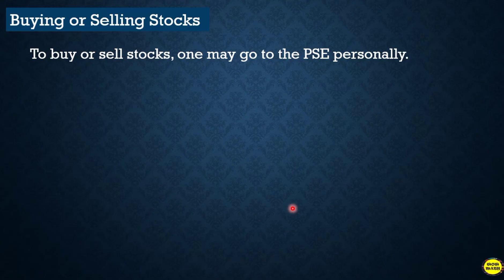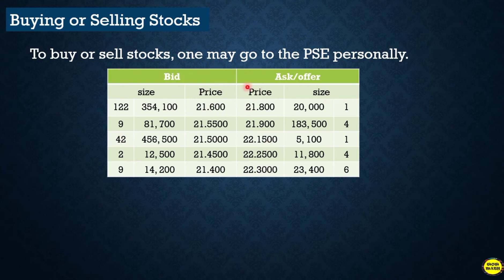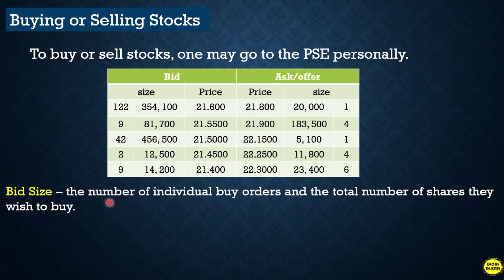To buy or sell stocks, you can personally go to the PSE, make phone calls to a registered broker, or log on to a reputable online trading platform. Those with accounts in online trading platforms may encounter a bid and ask offer table, which we'll now examine.